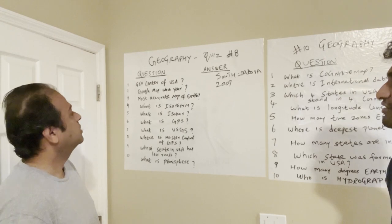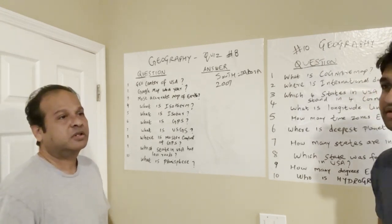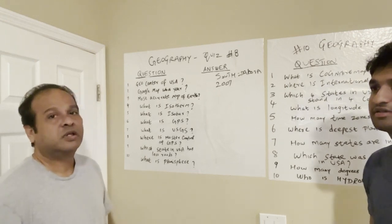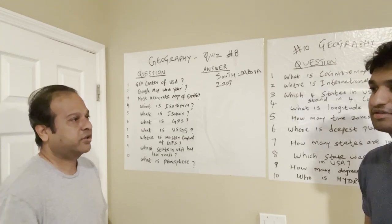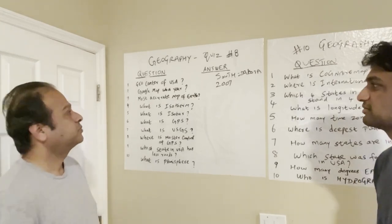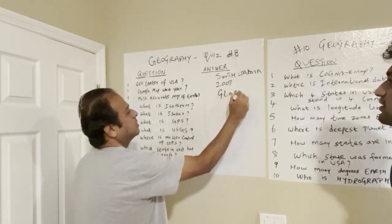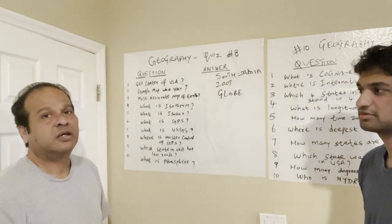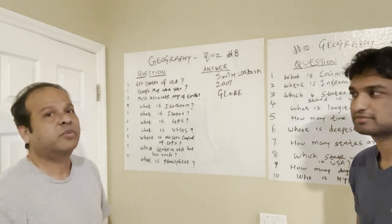And what is the most accurate map of the earth? The most accurate is the globe. Because tilted at 23 degrees, it shows the accurate earth locations. The biggest globe is in Maine at 42 feet — some company has done it.